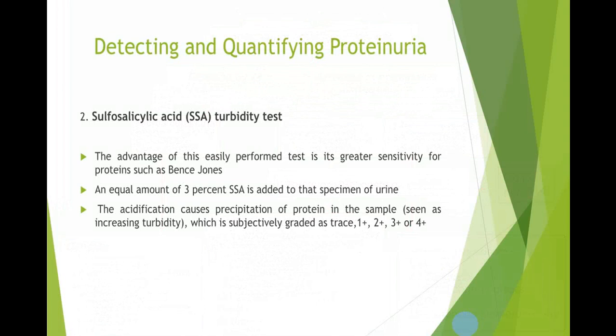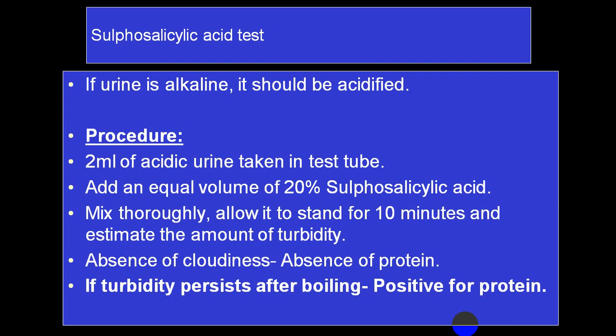The sulfosalicylic acid test — also called the SSA test — is very simple. Take equal amounts of 3 percent sulfosalicylic acid and an acidified urine specimen. After acidification, if precipitation of protein occurs, it is graded as 1-plus, 2-plus, 3-plus, or 4-plus depending on the amount of precipitation. It is quite useful to detect Bence Jones protein. The detailed procedure: take 2 ml of acidic urine, add equal volume of 20 percent sulfosalicylic acid, mix thoroughly, allow to stand for 10 minutes, then look for turbidity. If turbidity persists after boiling, it is positive for Bence Jones protein.